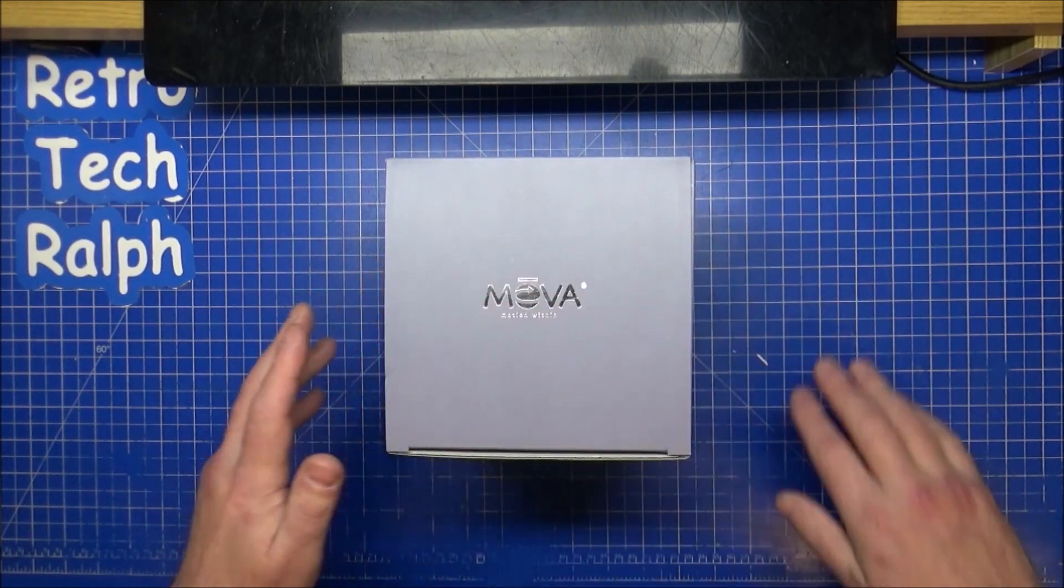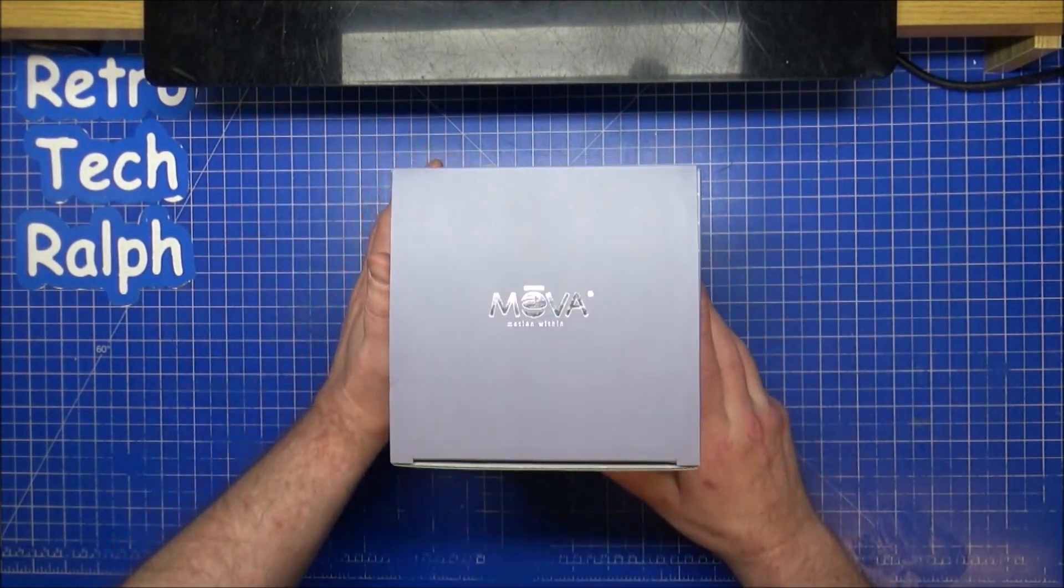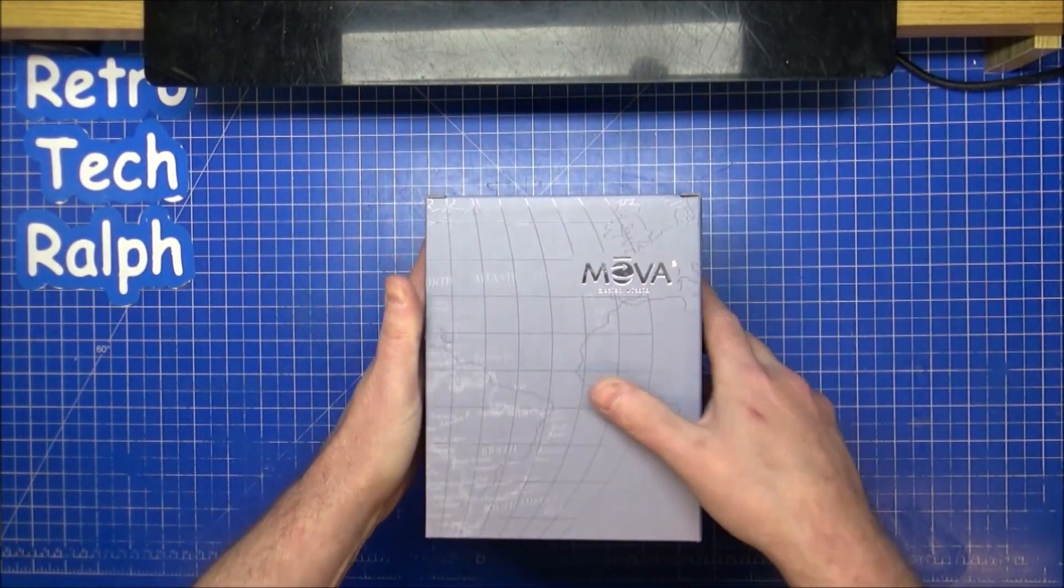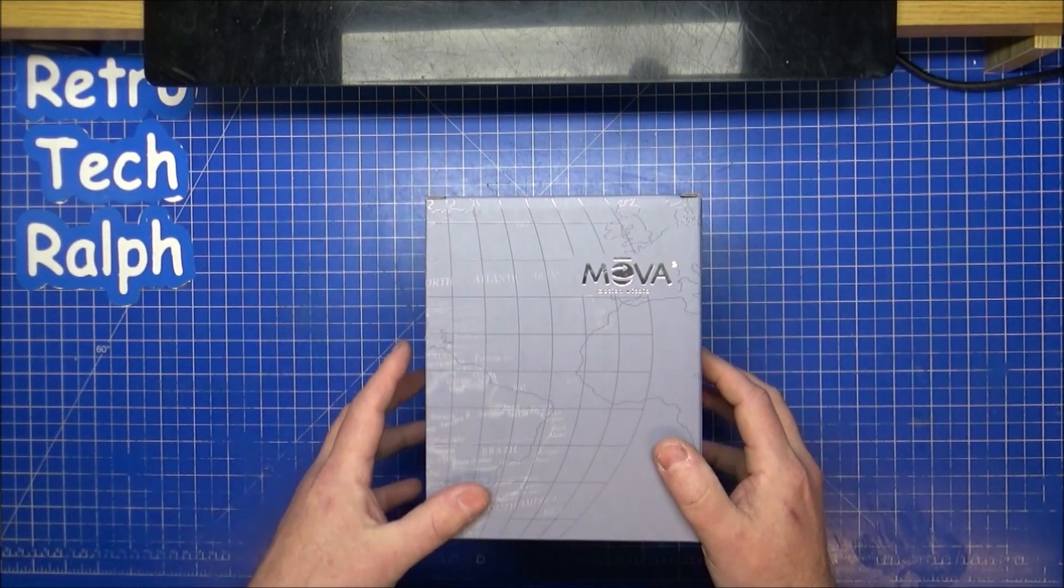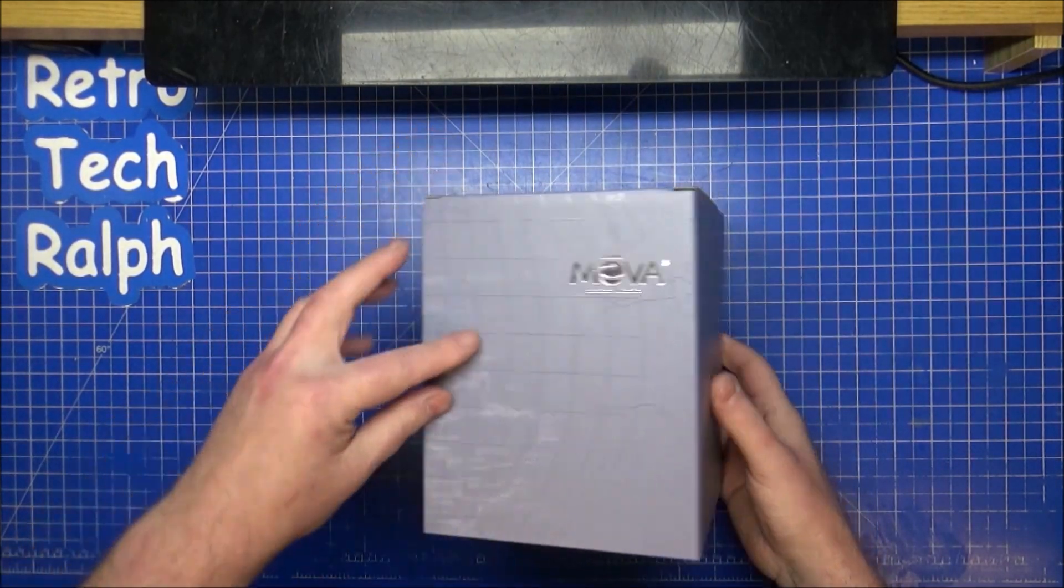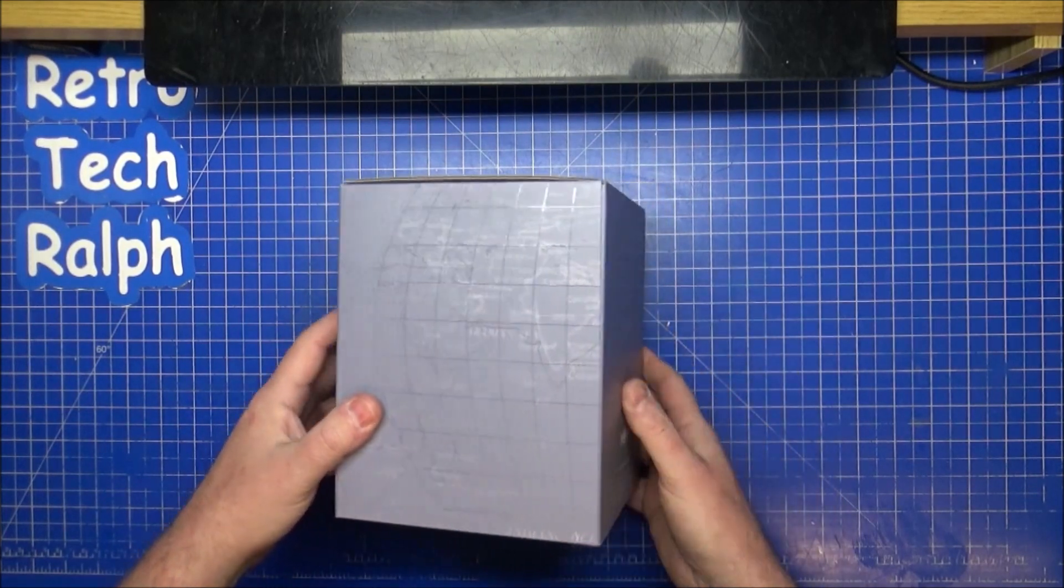Let me show you the box. You've got lovely artwork on the top of here with the silver MOVA motion within, showing the map of the world on all four sides.